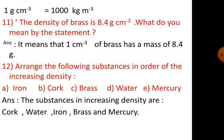Number 11. The density of brass is 8.4 gram per cubic centimeter. What do you mean by the statement? It means that 1 cubic centimeter of brass has a mass of 8.4 gram.